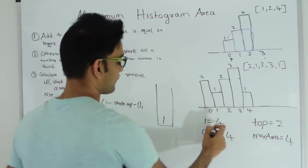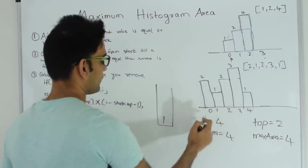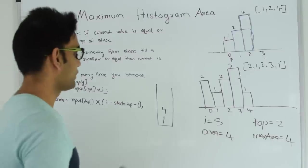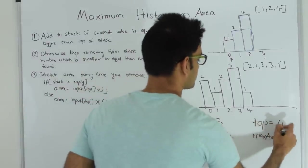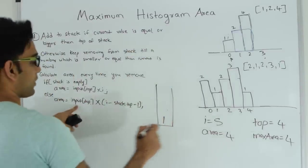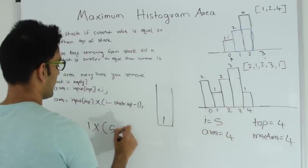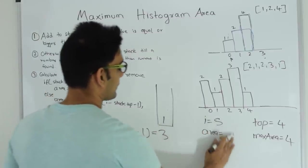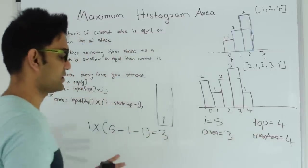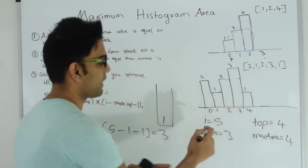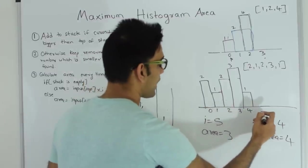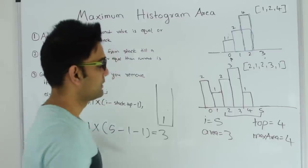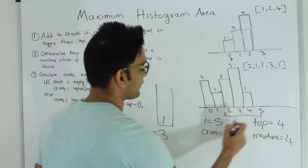Value at index 4 which is 1 is greater than or equal to value at index 1 which is also 1, so index 4 goes on top of the stack. Now i becomes 5 and we've reached the end of the array. We keep popping. Top becomes 4, stack is not empty, so area = input[4] × (i − stack_top − 1) = 1 × (5 − 1 − 1) = 3. Area is 3, not greater than max area, so we change nothing. Everything from i=5 back to this point has at least a height of 1, so we can safely multiply 1 by that difference to get area 3.